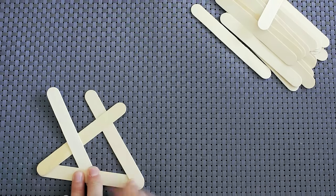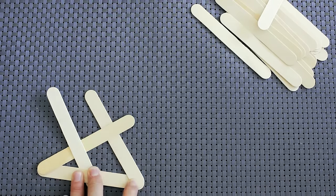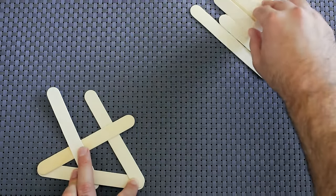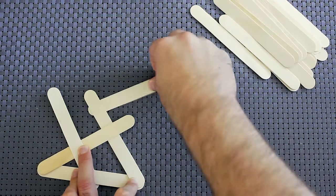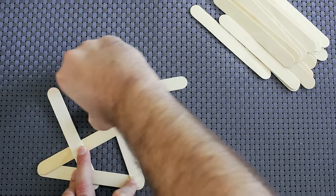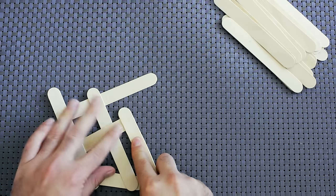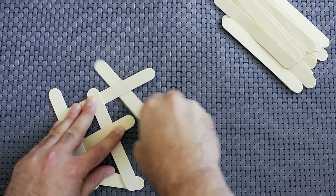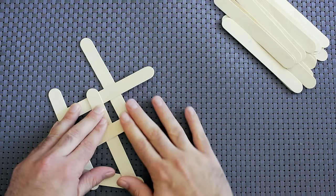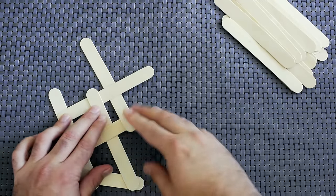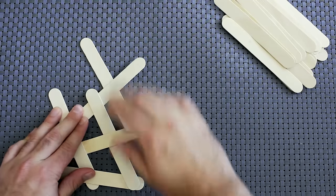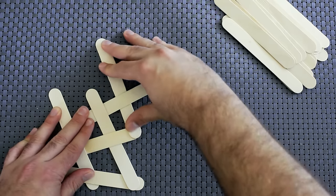Now we're going to continue to add popsicle sticks in this way. We're going to go under and over, under and over. You'll notice I don't have an under or over anymore, so I've got to shift things down a little bit. As you work on this, you'll get the hang of being able to do that.